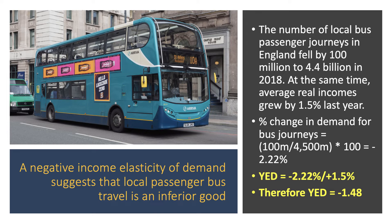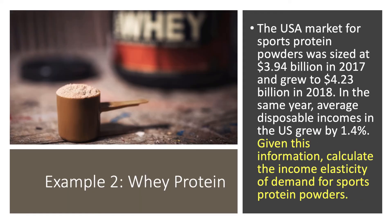What does that tell us about bus journeys? A negative income elasticity suggests that local bus travel is probably best described as an inferior good. People may decide to take a taxi, afford a car of their own, or some other form of transport rather than taking the bus as their income goes up. Of course, it depends on individual circumstance.